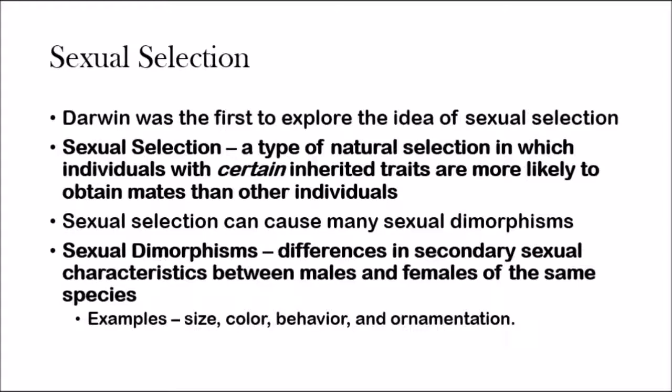Sexual selection can cause many sexual dimorphisms — differences in secondary sexual characteristics between males and females of the same species. For example, in human beings, men commonly have short hair while women have long hair. These differences can vary in organisms in terms of size, color, behavior, and ornamentation — basically how the organism looks.